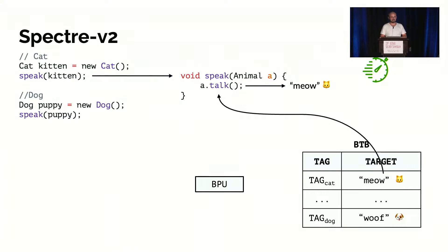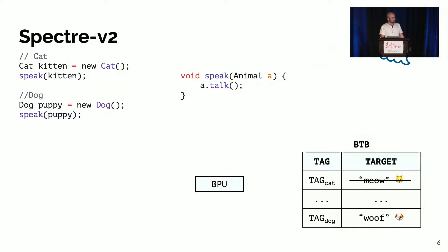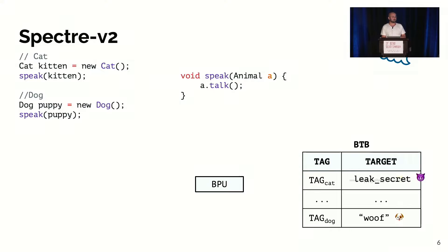So what's the problem with this from an attacker's perspective? You can exploit this because the BPU and the BTB are shared resources on the CPU core. What an attacker can do is simply overwrite one of the entries in the BTB — by generating another entry with the same tag. They can overwrite it with a more interesting function like a 'leak secret' function, which relies on some sort of micro-architectural traces like a cache attack to leak data.